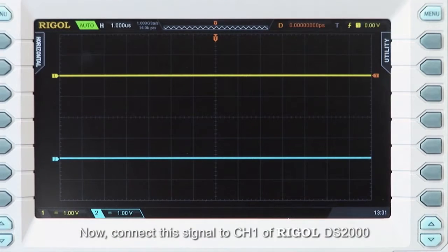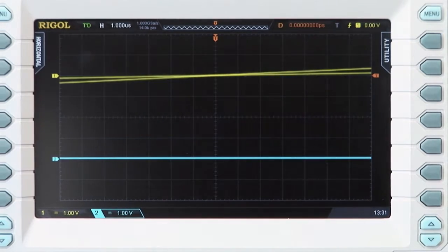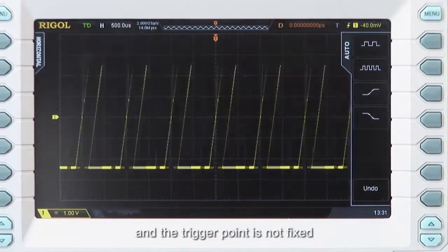Now let's connect this signal to channel 1 of a Rigol DS-2000 series oscilloscope. Press auto. As can be seen, the default trigger type is edge and the trigger point is not fixed.